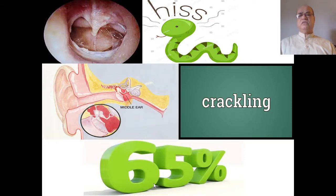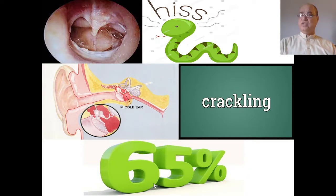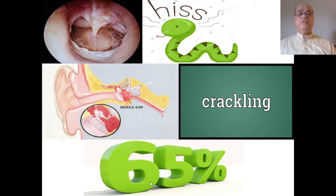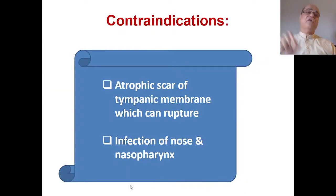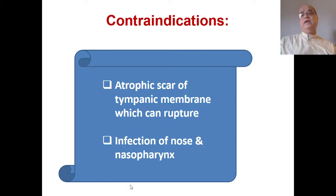Valsalva can only be performed in about 65% of persons. Younger children and elderly or mentally retarded people may not be able to follow the instruction to inhale forcefully and exhale while closing the mouth and nose. Contraindications for Valsalva include: atrophic scarring of the tympanic membrane, which may rupture with forceful aeration; and upper respiratory tract infection, where soiled secretions from the nose and nasopharynx can travel into the middle ear through the Eustachian tube.